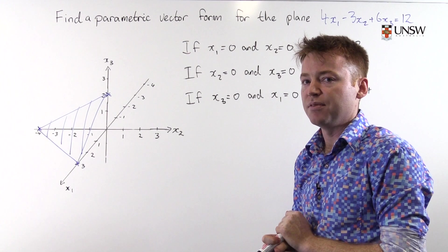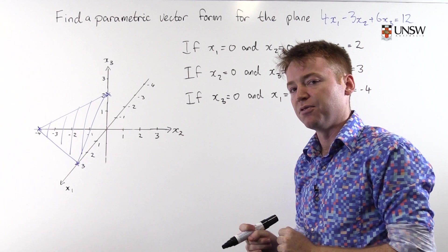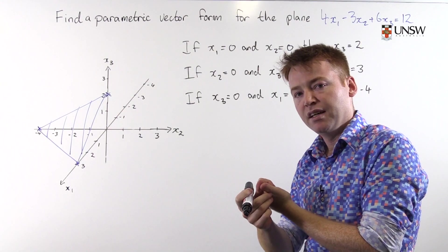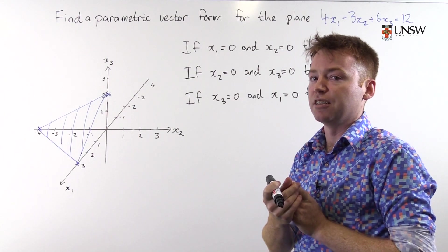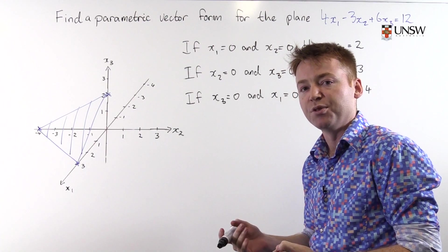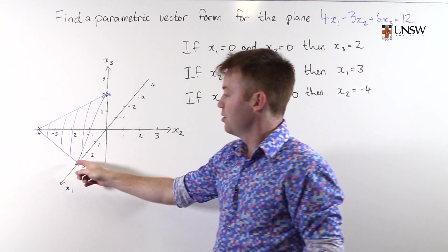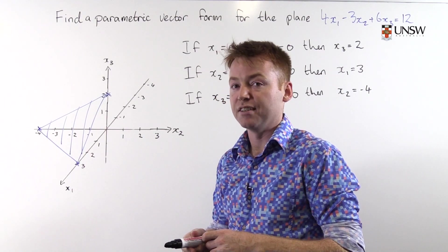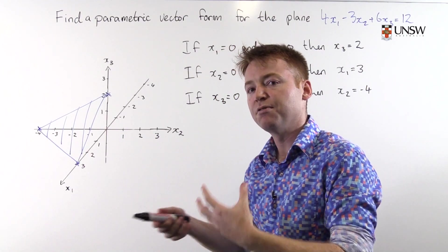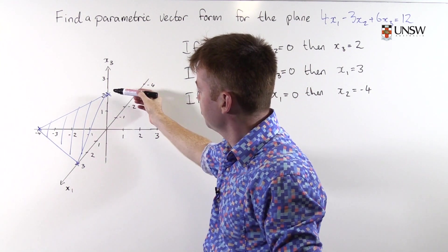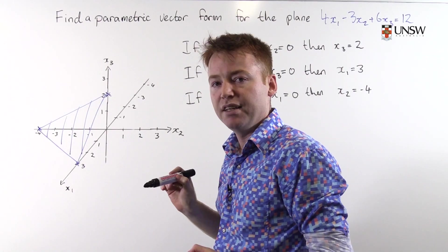With these three points in hand we can find the parametric vector form of the plane. We need a point on the plane and two vectors which are parallel to the plane. This is why parametric vector form of the plane is not unique because it's up to you to choose one of these three points to be on the plane and then from there choose two vectors parallel to the plane. So there's a lot of freedom to choose your parametric vector form of the plane. Let's choose this point here to be on the plane.